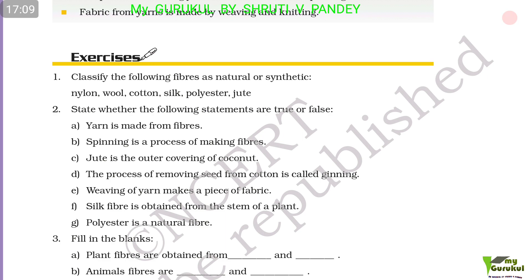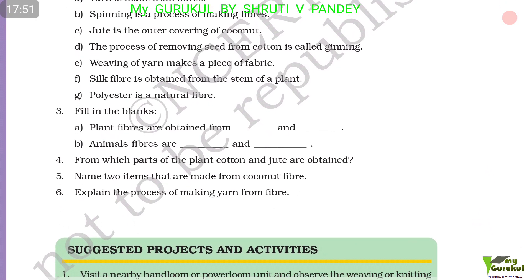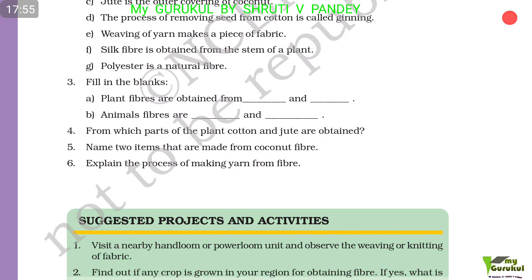State whether the following statements are true or false. 'Yarn is made from fibers' — True. 'Spinning is a process of making fibers' — True. 'Jute is the outer covering of coconut' — False. 'The process of removing seeds from cotton is called ginning' — True. 'Weaving of yarn makes a piece of fabric' — True. 'Silk fiber is obtained from the stem of a plant' — False. 'Polyester is a natural fiber' — False.